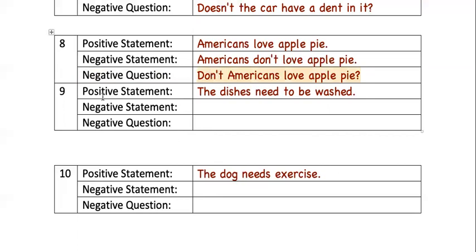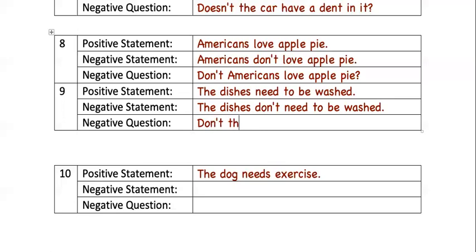Number nine: the positive statement is 'The dishes need to be washed.' The negative statement is 'The dishes don't need to be washed.' And the negative question is: 'Don't the dishes need to be washed?'